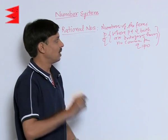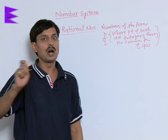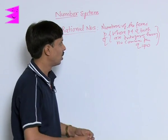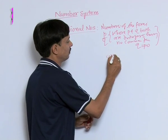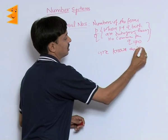What are rational numbers? Numbers in the form of P by Q where P and Q are integers having no common factor with Q is not equal to 0 are known as rational numbers.